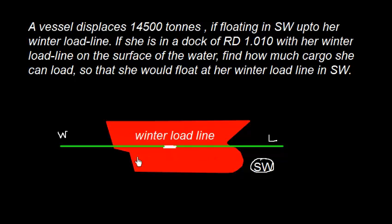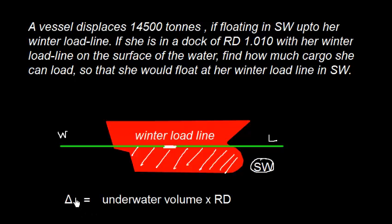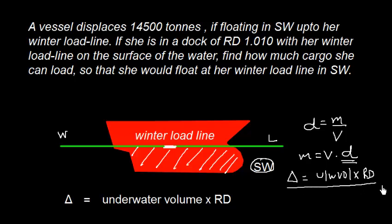Well we need to find what is the underwater volume. That can be calculated by this formula that displacement is nothing but underwater volume multiplied by relative density. You know that density equals mass over volume, so mass equals volume into density. However, we can find the displacement as underwater volume and instead of density we can use relative density. That is how this formula has come: displacement equals underwater volume into relative density.